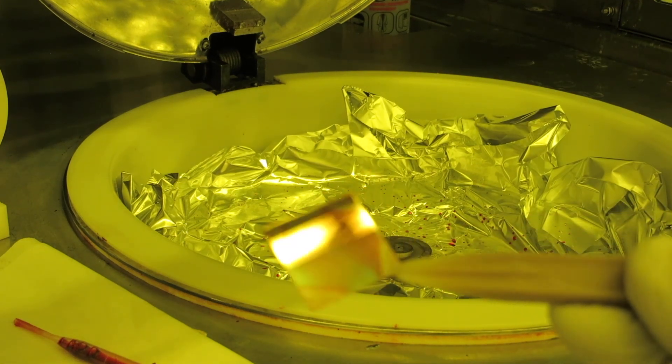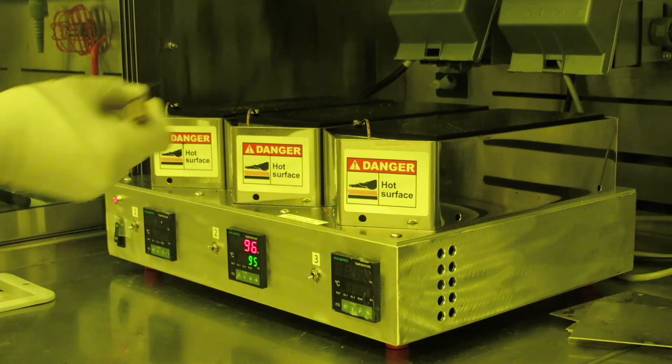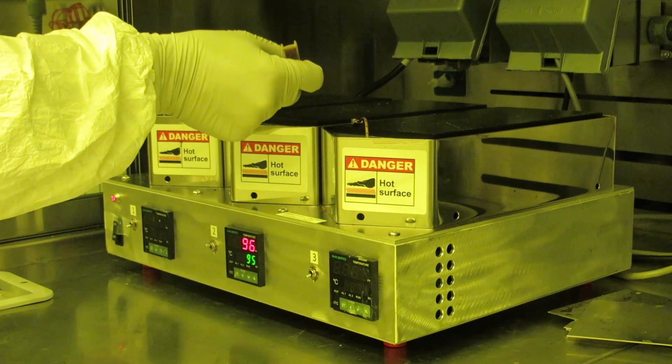For normal resist, you can put the sample directly on the black surface of the hot plate. For other materials like SU8, you would want to use the little sheet metal aluminum trays which are sitting to the right of the hot plate.